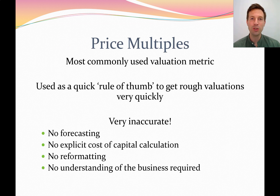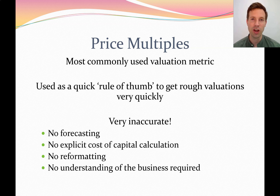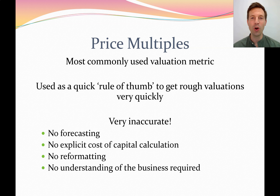In conclusion, price multiples are the most commonly used valuation metric, and the reason is that they're so simple and easy — you don't need an accounting degree to do these calculations. They're often used as a quick rule of thumb for rough valuations. For example, knowing that a rough average price to earnings ratio on the Australian Stock Exchange is about 20, you can multiply a company's earnings by 20 to get a rough estimate. It's a very quick and dirty approach.